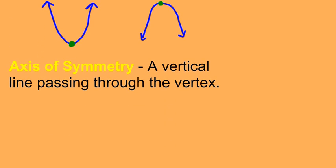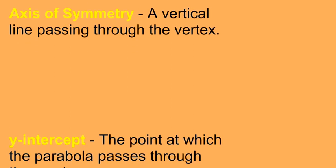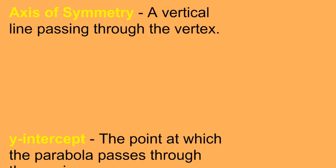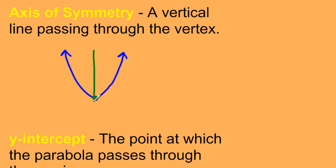An axis of symmetry is a vertical line passing through the vertex. So if I have a parabola, the axis of symmetry passes through the vertex and is vertical, going up or down.